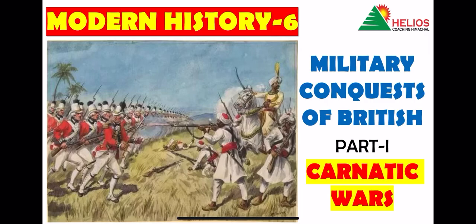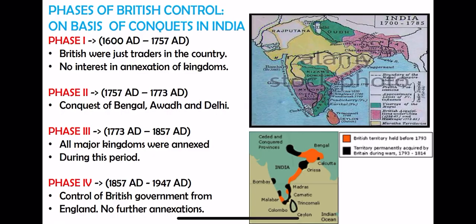Before discussing this, we need to know some things about the British Empire. When we talk about British control in India, generally we can divide the conquests of India into four phases — this is very important to understand. The first phase was from 1600 to 1757 AD. From 1600 to 1757, the British were only concerned about trade; they had nothing to do other than trade, made no attacks and no conquests.